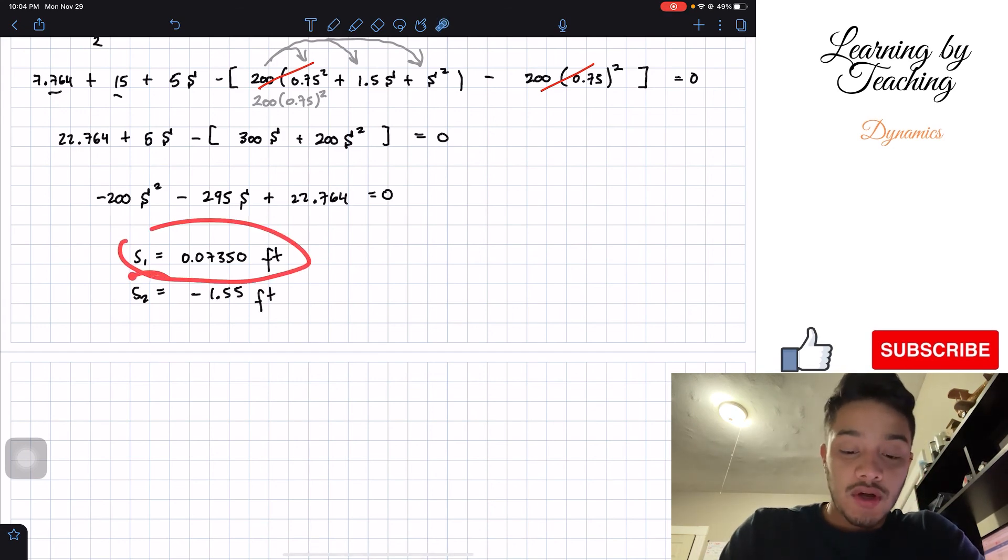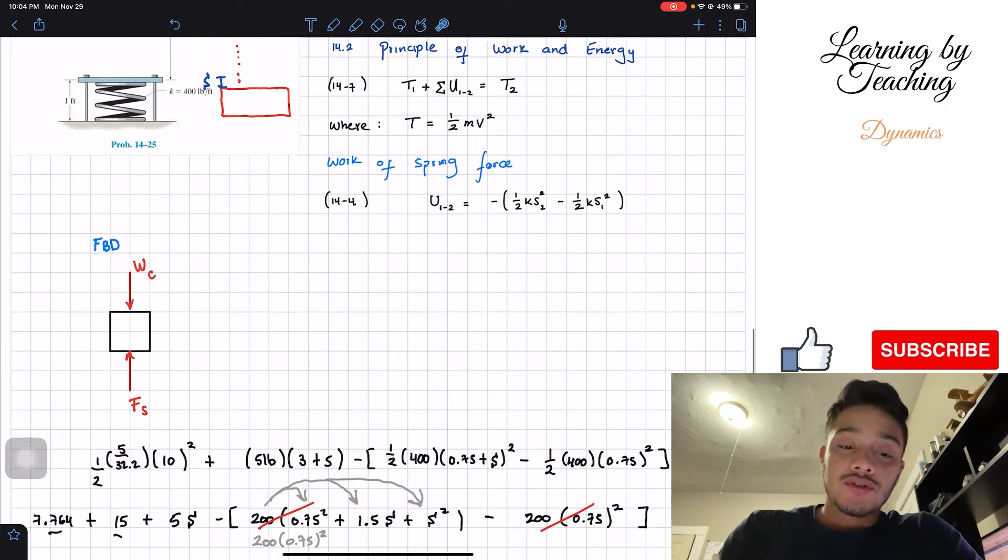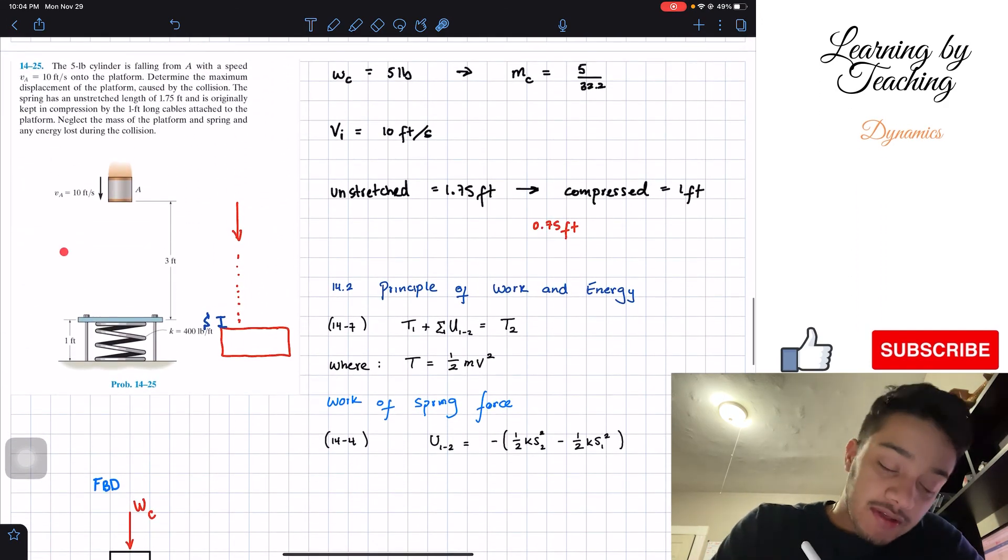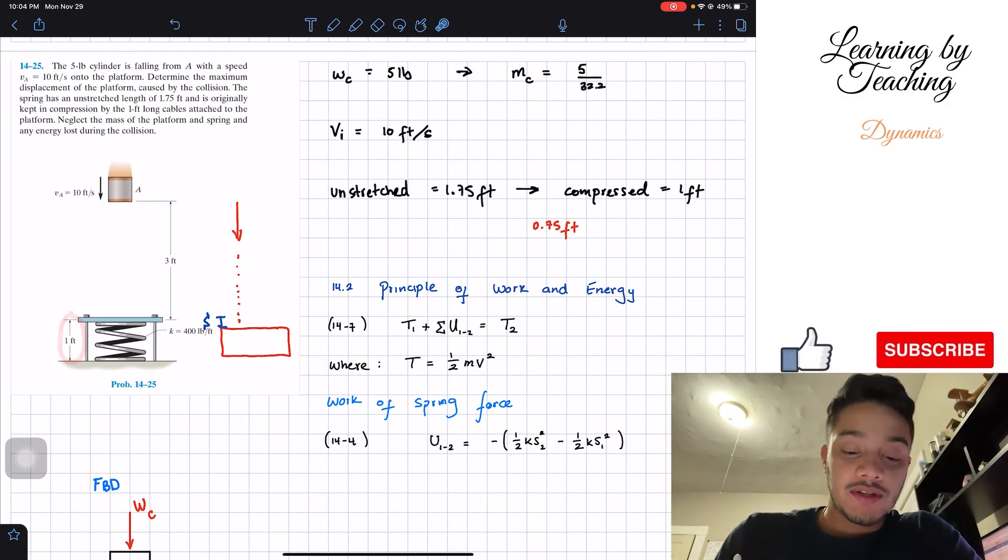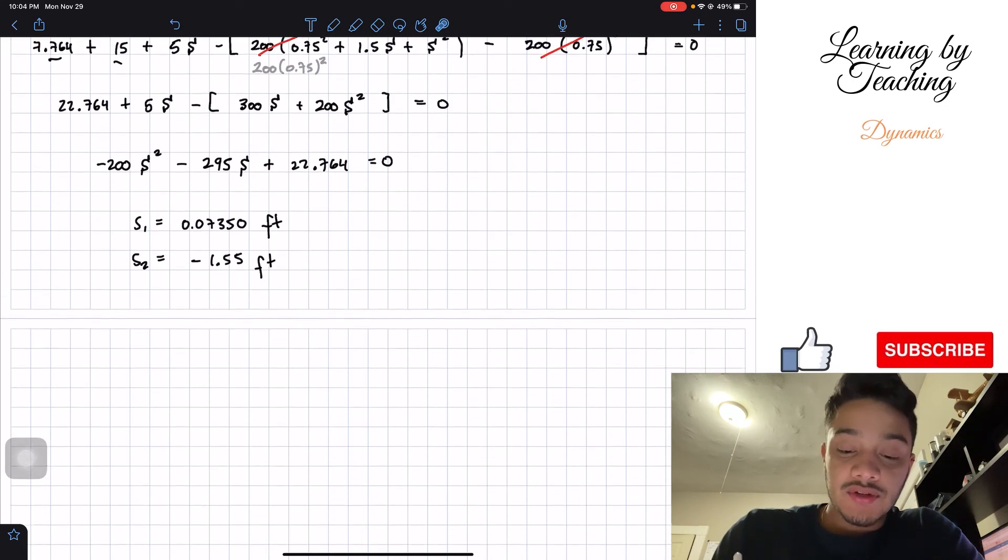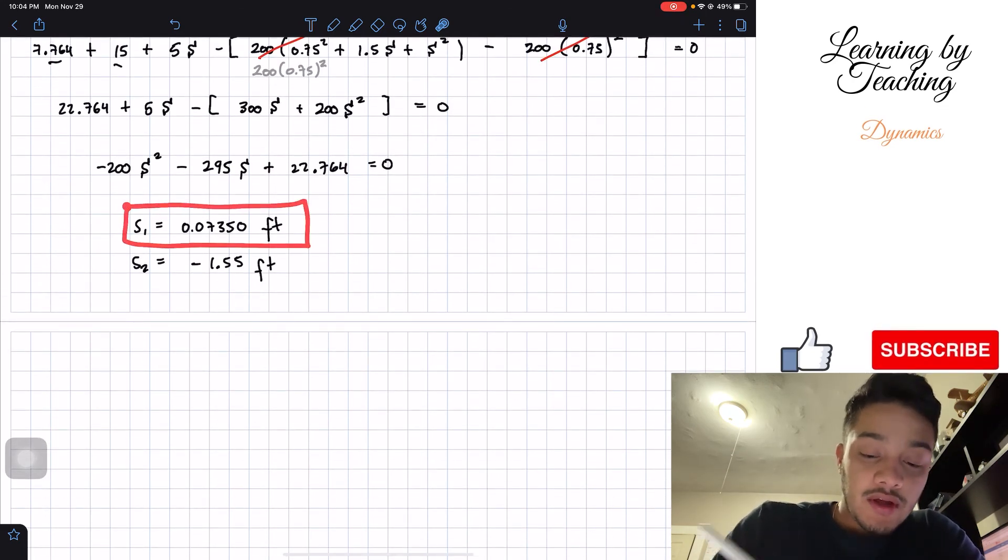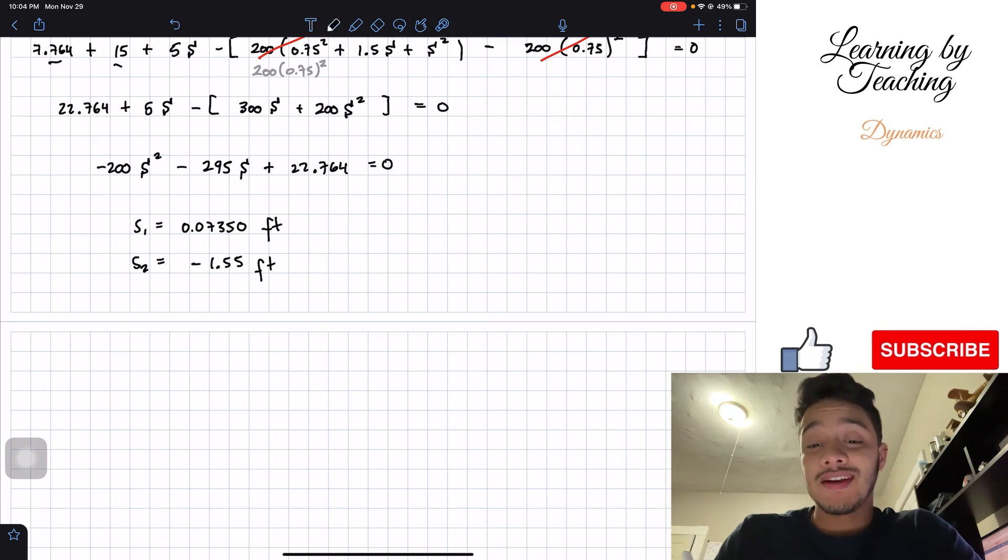Which one of these two are the correct ones? Well let's take it out. Initially we're expecting this cylinder to go down and this distance to be positive, meaning going in this direction, right, just as the direction of our velocity, an amount less than one feet. If we pay attention over here, we have a positive distance that is less than one feet, therefore we can forget about this answer and we will know that our answer for this question is going to be 0.07350 feet.